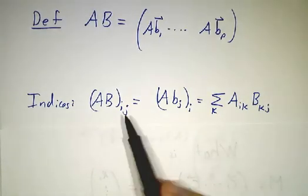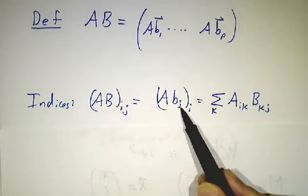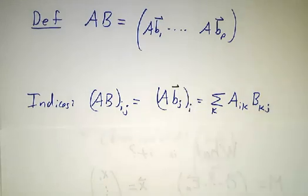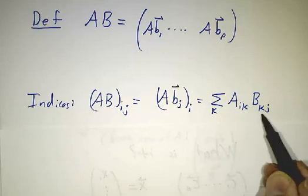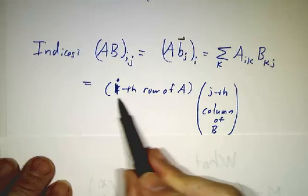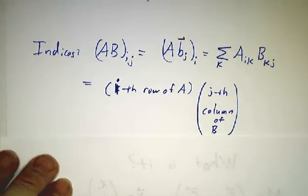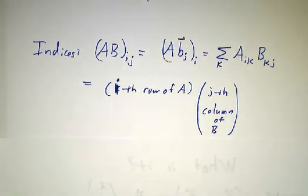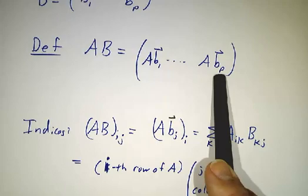And in terms of indices, the ij index of ab is the i-th index of a times bj. And that's given by the sum. It's the sum of aik times bkj. Now you could have gotten that by saying, oh, we're going to take the i-th row of a and multiply it by the j-th column of b. That's a perfectly good way to calculate this product.